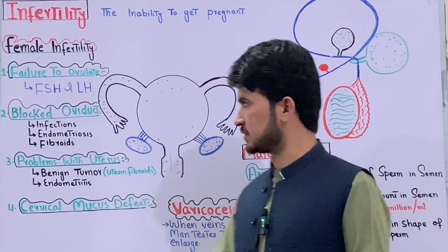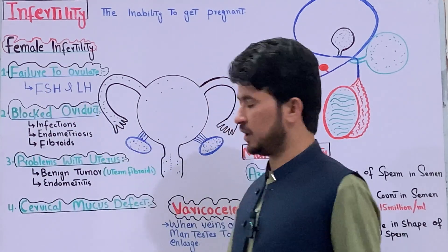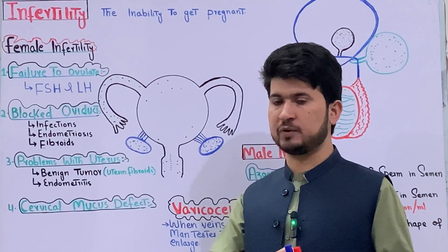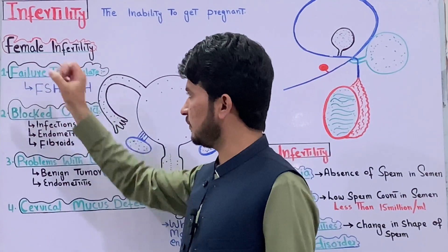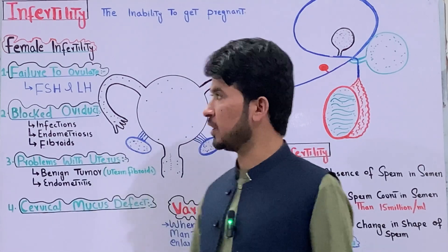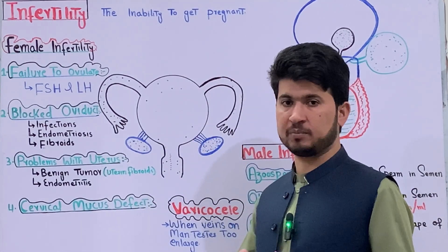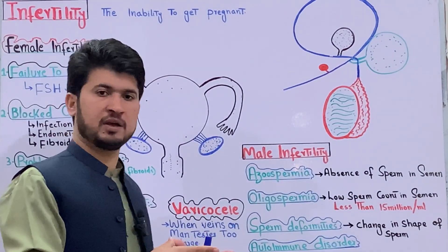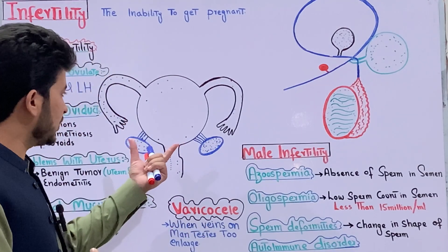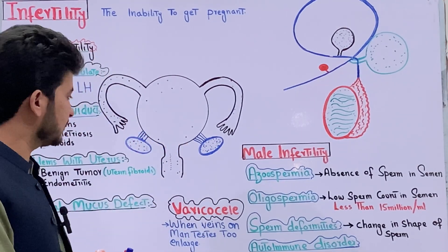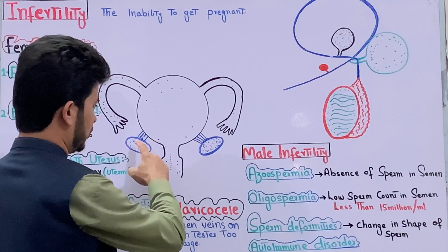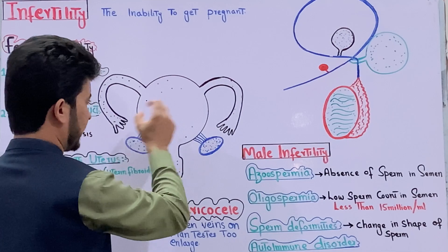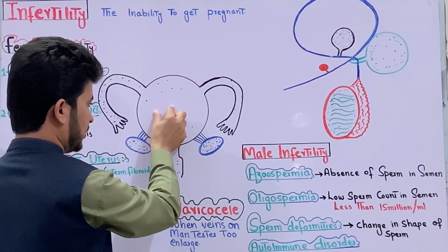First, we will discuss female infertility. If the female reproductive system has difficulty getting pregnant, then the female is said to have infertility.